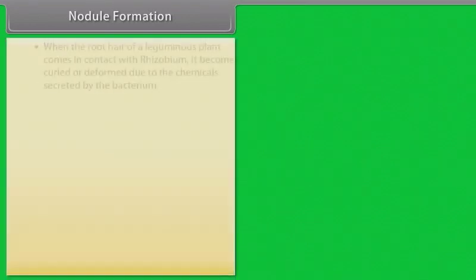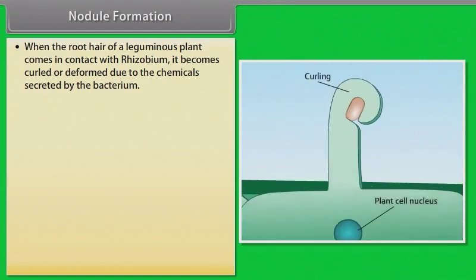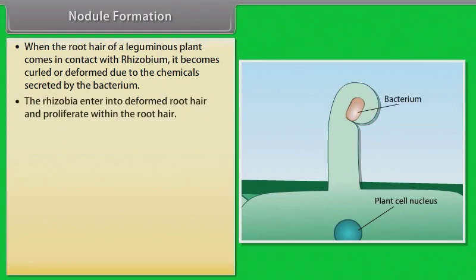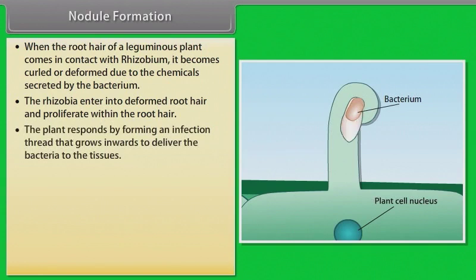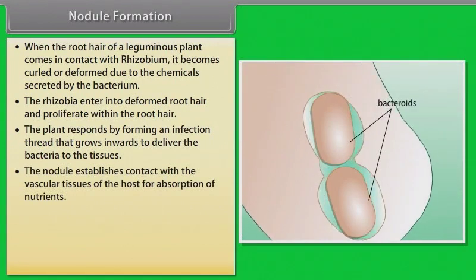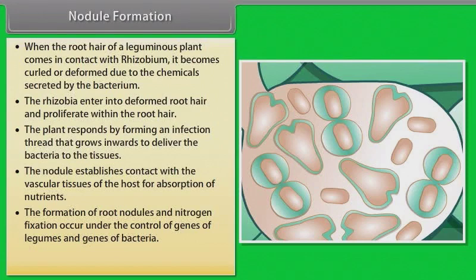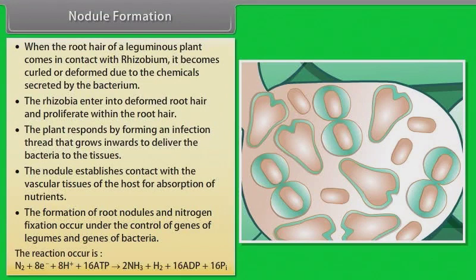Nodule formation: when the root hair of a leguminous plant comes in contact with Rhizobium, it becomes curled or deformed due to the chemicals secreted by the bacteria. The rhizobia enter into the deformed root hair and proliferate within it. The plant responds by forming an infection thread that grows inwards to deliver the bacteria to the tissues. The nodule establishes contact with the vascular tissues of the host for absorption of nutrients. The reaction is: N₂ + 8e⁻ + 8H⁺ + 16 ATP → 2NH₃ + H₂ + 16 ADP + 16 Pᵢ.